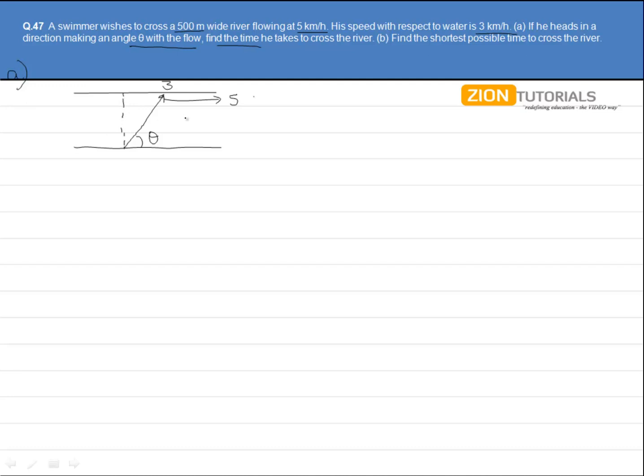Now, we all know that only the vertical component will be responsible to let him cross the river. So, we can say that only 3 sin theta component will take him to the opposite side.